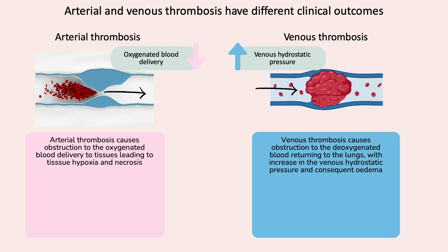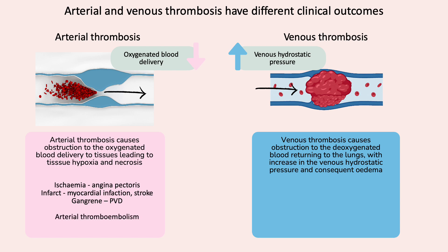Because arteries are meant to transport oxygenated blood, occlusion by arterial thrombosis is associated with ischemic episodes such as angina pectoris, or it may cause an infarct such as myocardial infarction and stroke, or obstruction of the arteries supplying the lower limbs may cause gangrene and peripheral vascular disease. Occasionally, arterial thrombi may detach and be transported distally to cause arterial thromboembolism.